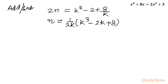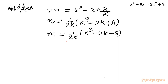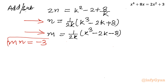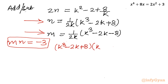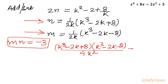Subtracting gives m equal to 1 over 2k times k cube minus 2k minus 8. So we have calculated m and n in terms of k. Now I will use equation number 3, which was mn equal to negative 3. Substituting: k cube minus 2k plus 8 times k cube minus 2k minus 8 divided by 4k square equal to negative 3.